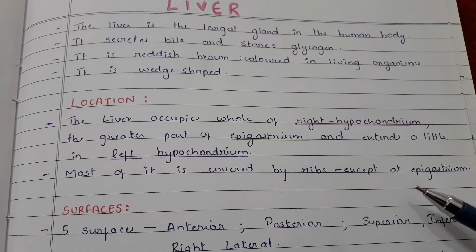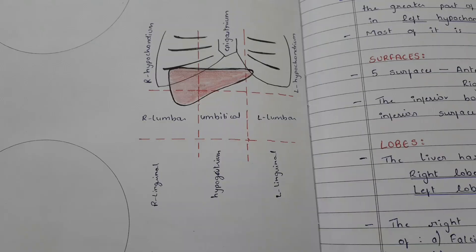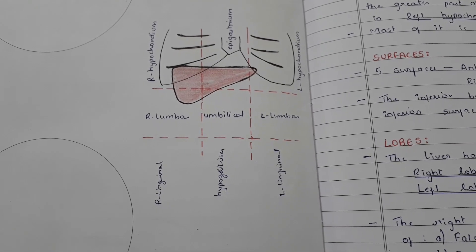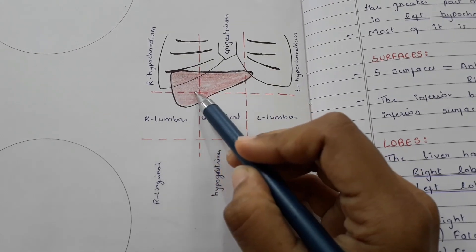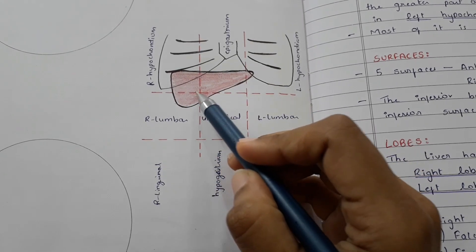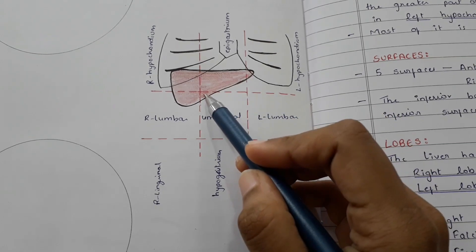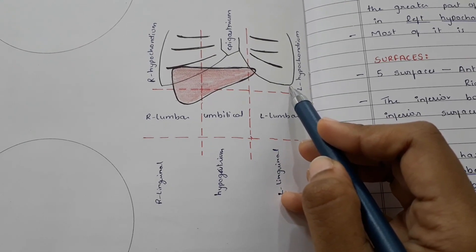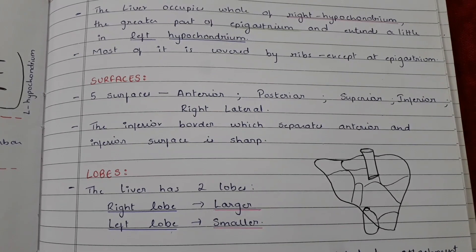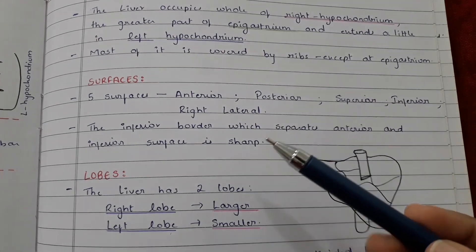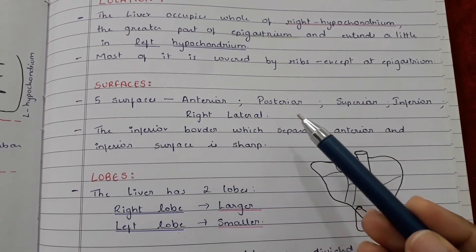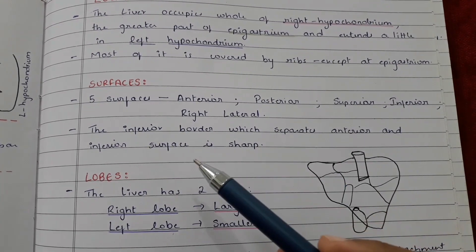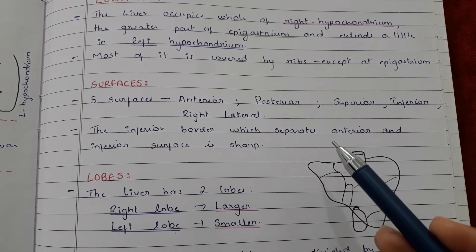Most of the liver is covered by the ribs except at the epigastrium. Referring to the diagram, a major portion occupies the right hypochondrium, a greater part of the epigastrium, and a small portion extends into the left hypochondrium. There are five surfaces: anterior, posterior, superior, inferior, and the right lateral.